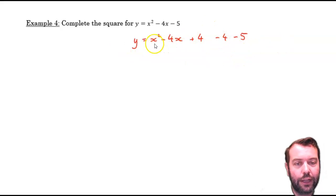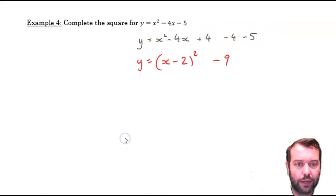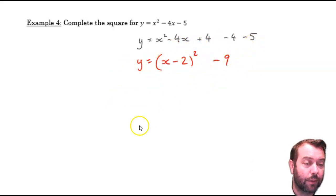However, now, these first three terms form a perfect square. And that perfect square is x-2 all-squared. So, hopefully, I write it like that. x-2 all-squared minus 9. We have completed the square. y equals x minus something squared minus some other term here.